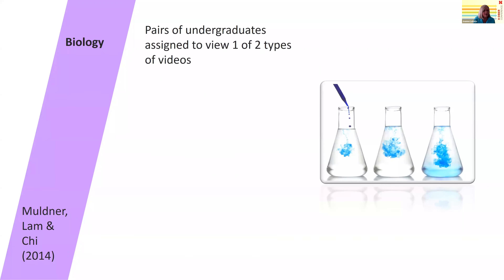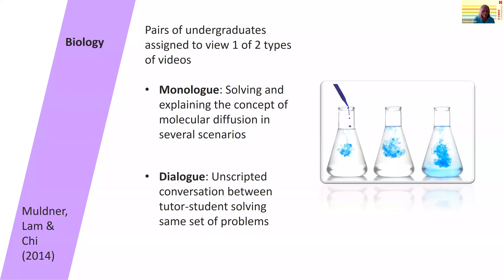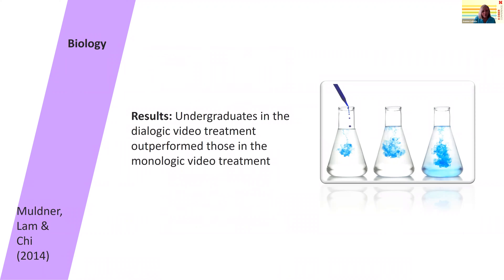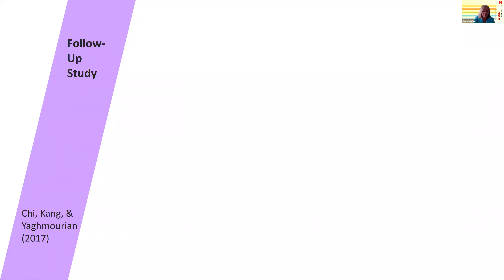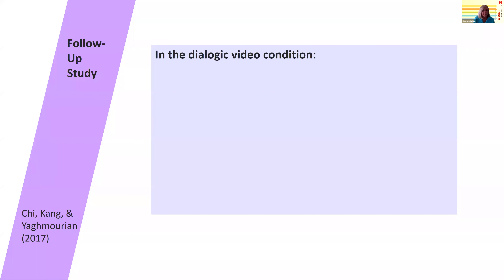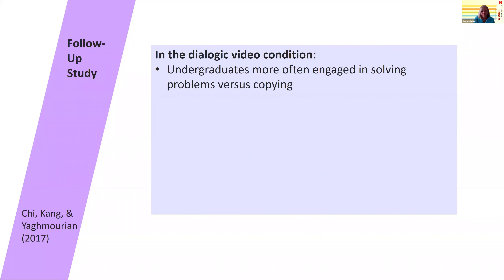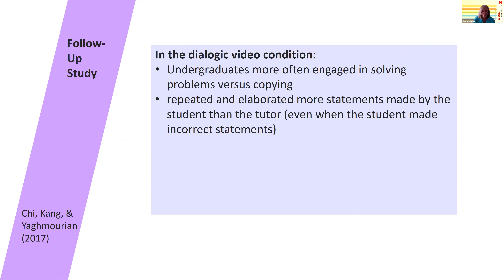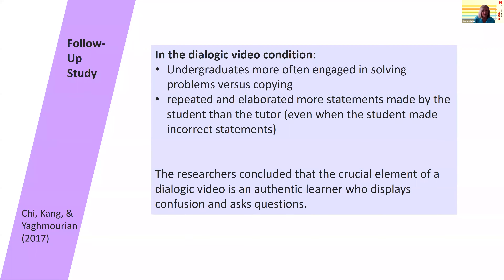In biology, undergraduates were again assigned to monologue versus dialogue treatments. In this case, the dialogue was unscripted — unlike Derek Muller's scripted videos — and was around the topic of molecular diffusion. The dialogue group outperformed those in the monologue group. Mick Chi and colleagues did a follow-up study to find out why, doing a secondary analysis on the same data. They found that in the dialogic video condition, undergraduates more often engaged in problem-solving versus copying solutions, and they repeated and elaborated more statements made by the student than the tutor — even when the student made incorrect statements. The authors concluded that the crucial element of a dialogic video is an authentic learner who displays confusion and asks questions.